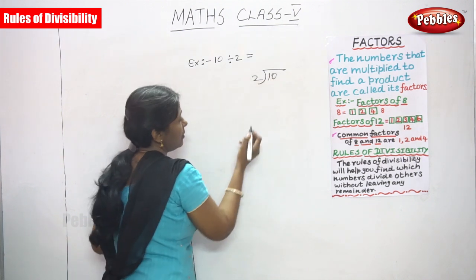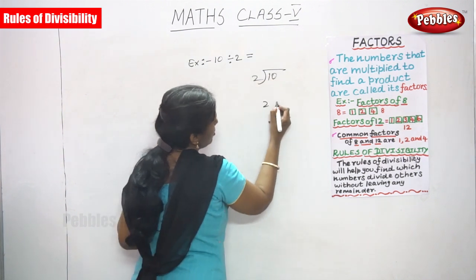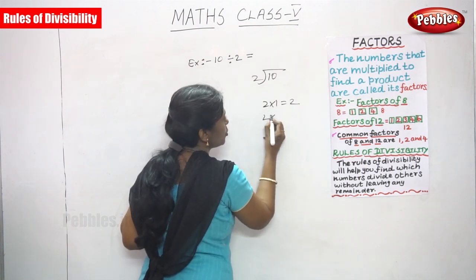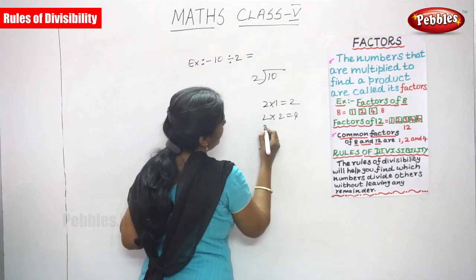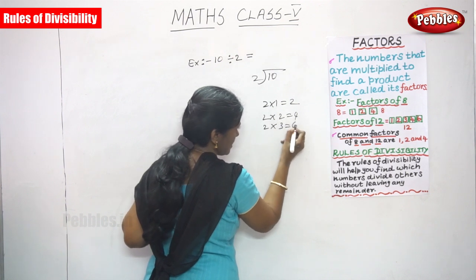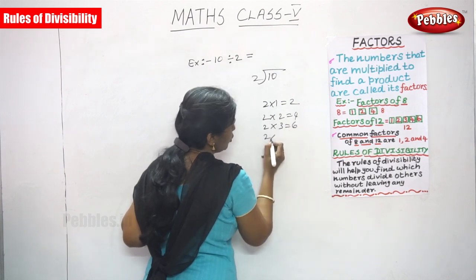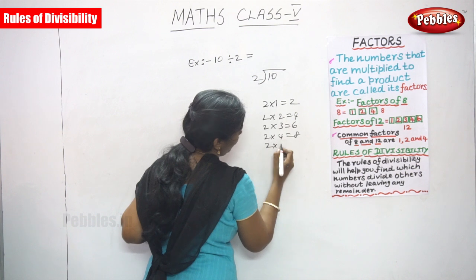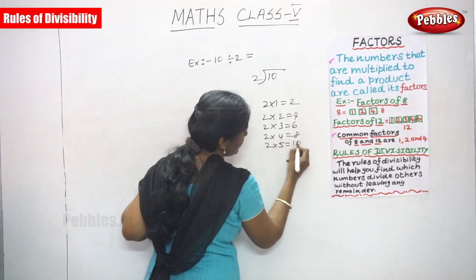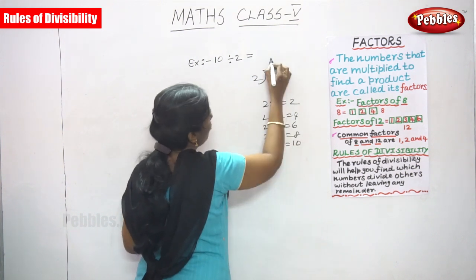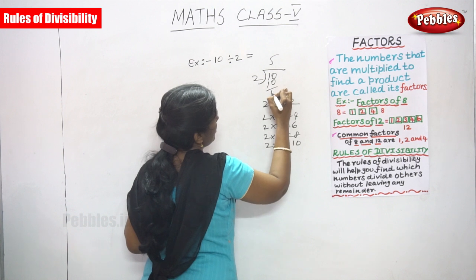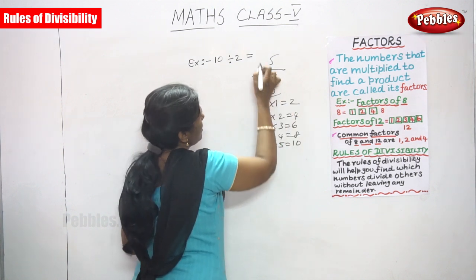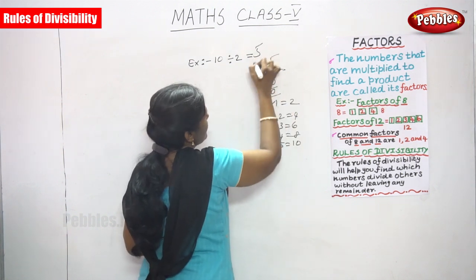You must say the 2 times table: 2 ones are 2, 2 twos are 4, 2 threes are 6, 2 fours are 8, and 2 fives are 10. So 5 times. The remainder is 0, and the answer is 5.